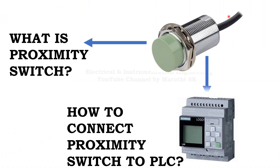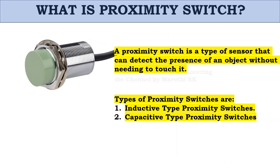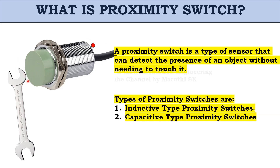On the screen, we are seeing the device called a Proximity Switch. A Proximity Switch is a type of sensor that can detect the presence of an object without needing to touch it. Here, the object is present nearby the Proximity Switch, so without touching it, the Proximity Switch has sensed this object, given the indication light, and sent the signal to the PLC.